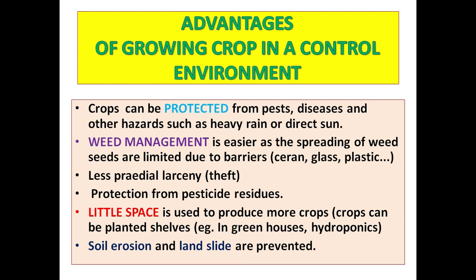Advantages of growing crops in a controlled environment: number one, crops can be protected from pests, diseases, and other hazards such as heavy rain or direct sun; number two, weed management is easier as the spreading of weed seeds is limited due to barriers such as glass and plastic; number three, less predial larceny; number four, protection from pesticide residues; number five, little space is used to produce more crops — crops can be planted on shelves, for example in greenhouses or hydroponics.